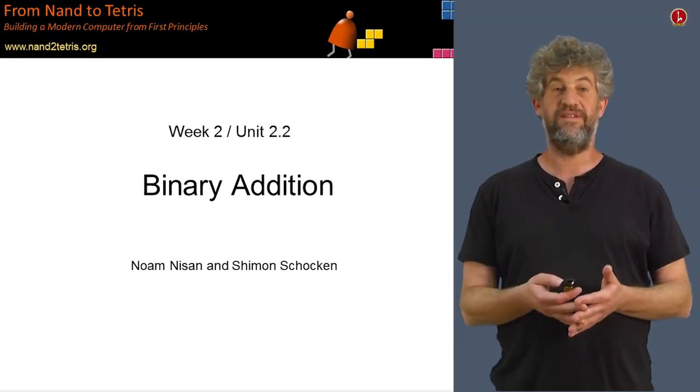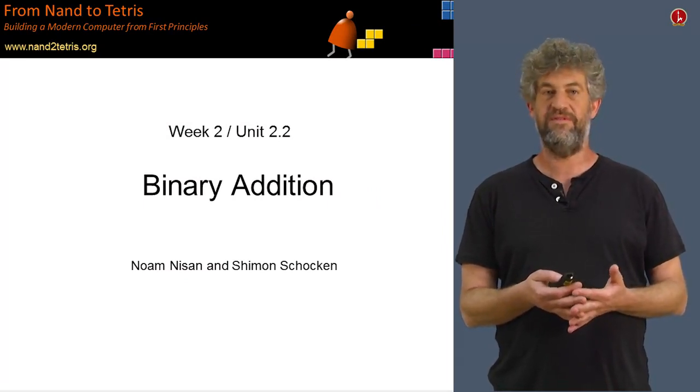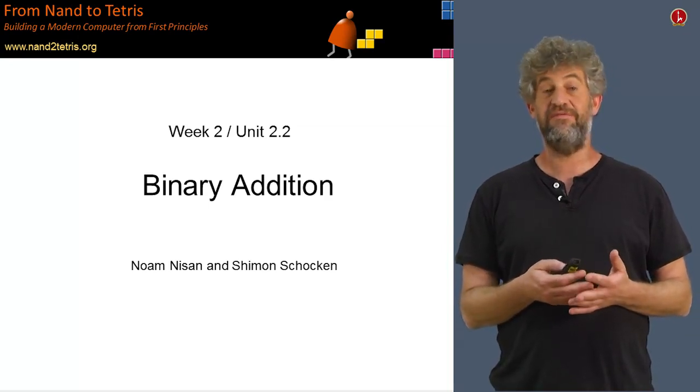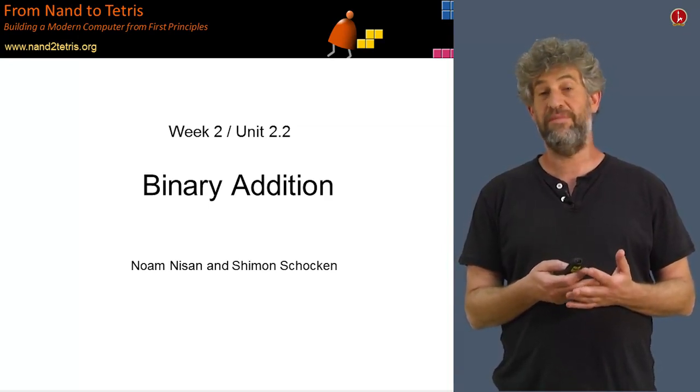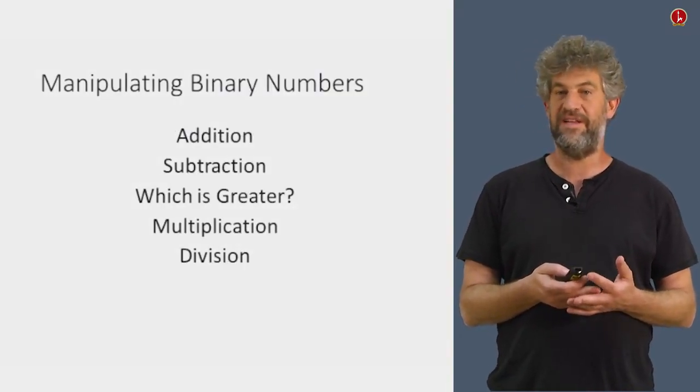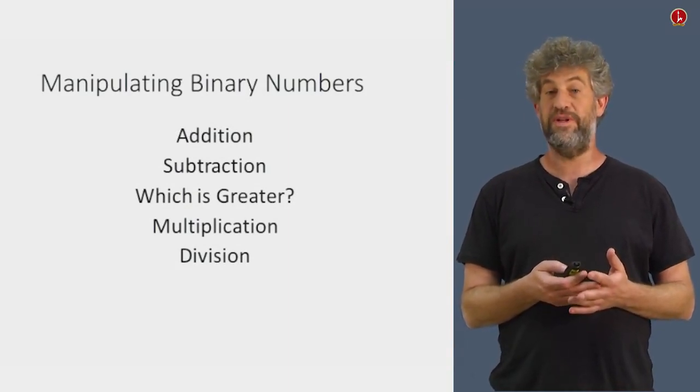In the last unit, we saw how to represent numbers in computers using binary bits. But now we can represent numbers. That's the important thing. Now, the whole point of representing something is if we want to manipulate it. What kind of manipulation do we want to do with numbers? We want to add them, subtract them, multiply them, and so on. This is what we're going to learn how to do in this unit.